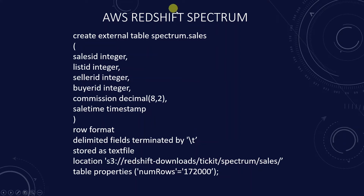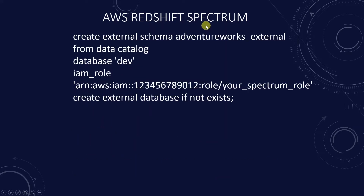The first step to creating external tables based on S3 is to create an external schema. The external schema references a database in the external data catalog and provides the IAM role ARN that authorizes our Redshift cluster to access Amazon S3 on our behalf. We will issue the following command to create an external table.